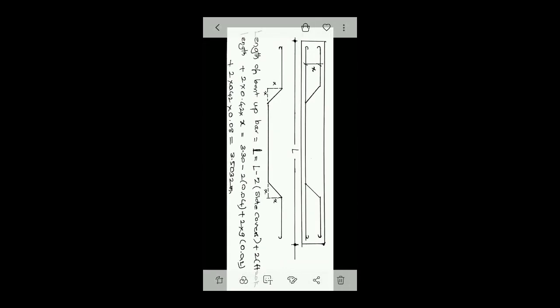Similarly, here we can take, in our problem, the length of the bent up bar will be equal to small l. That will be equal to capital L minus two side covers plus two hook length plus two times 0.42 times x. Here, x is the distance between top bent up bar and bottom bar. Now, overall, it will be 3.3 minus two times of side covers, that is 40 mm, plus two times of 9D, that is hook length both sides, plus two times of 0.42 times 8 cm. That works out to 3.50.